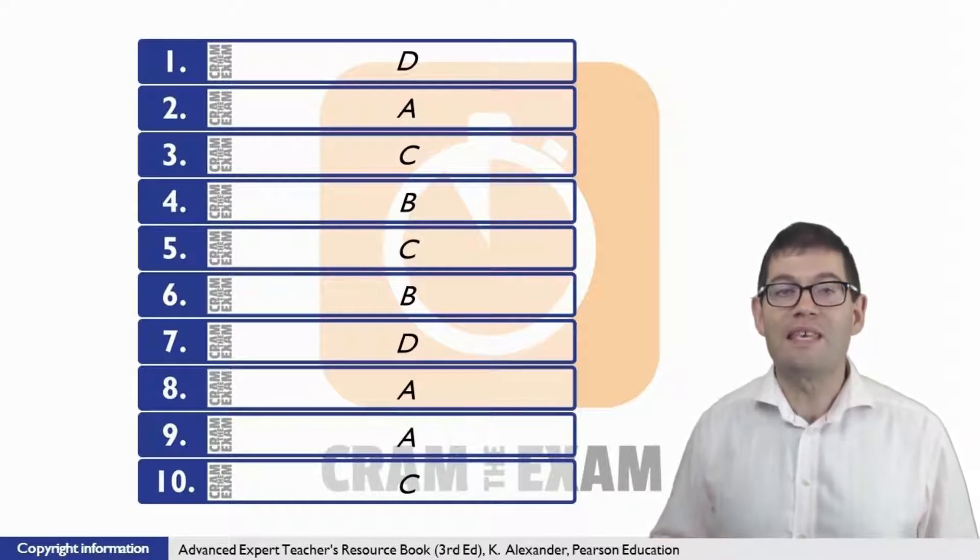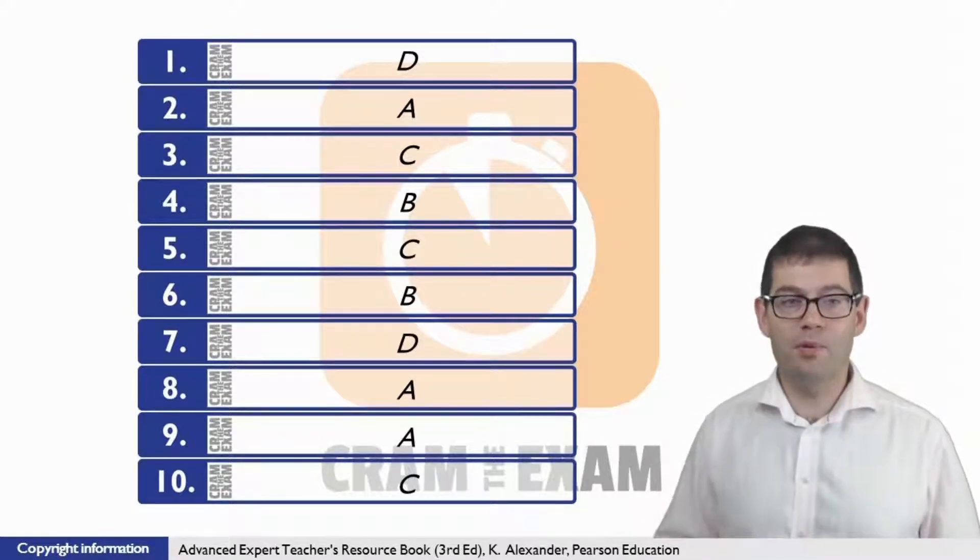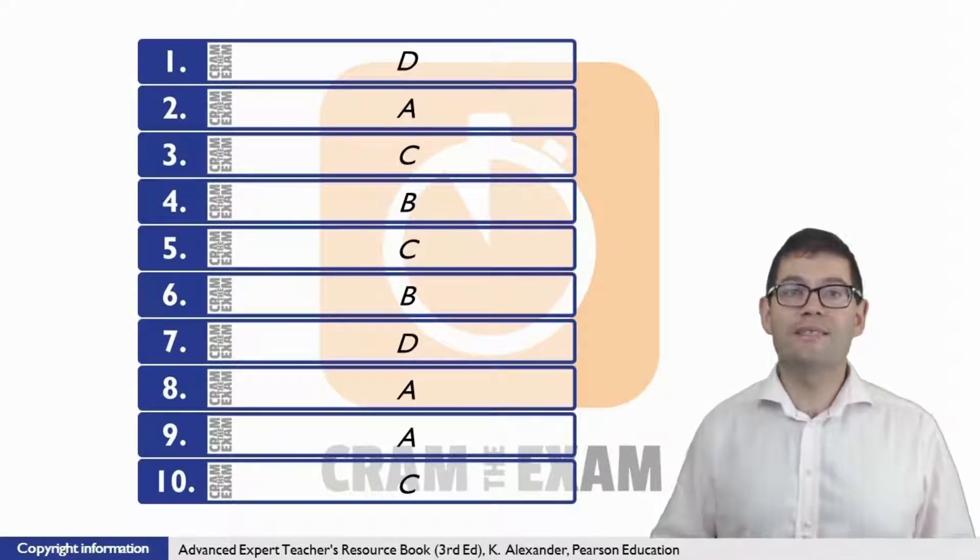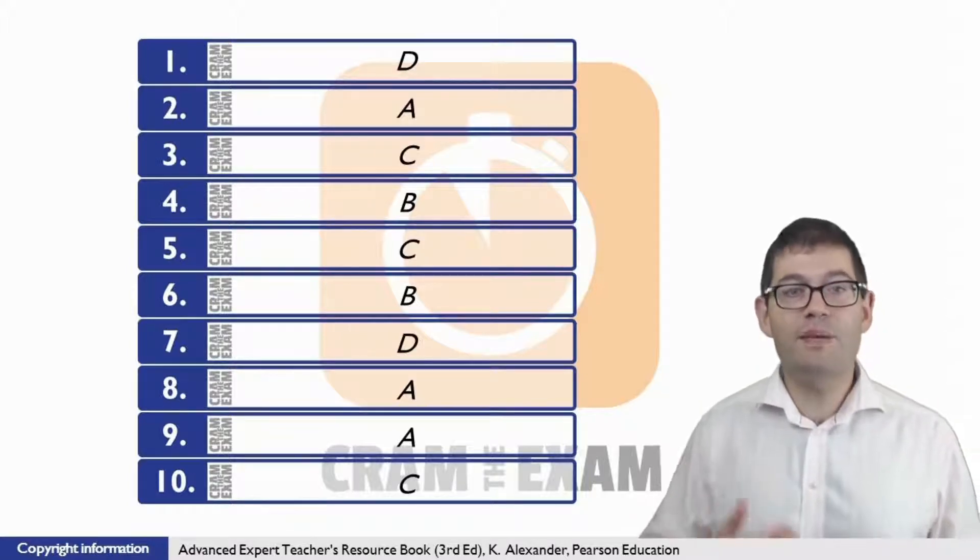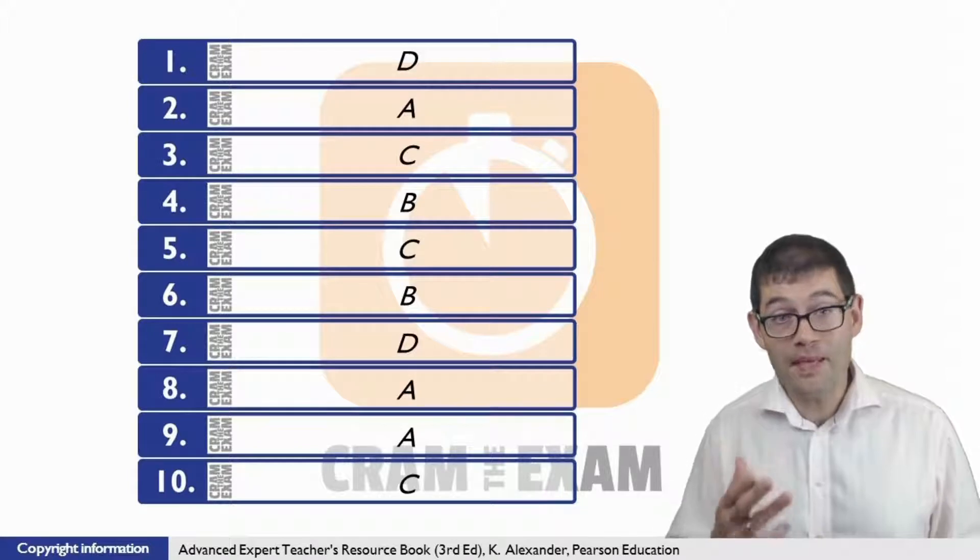For question 4, the answer is B. Kim and Jason believe in the importance of getting direct customer feedback. Importance and direct customer feedback refer to essential and getting feedback from the people who buy our products in B, respectively.